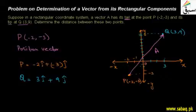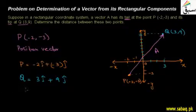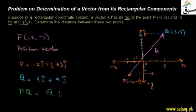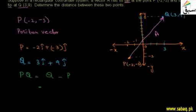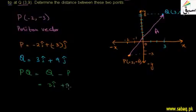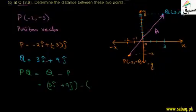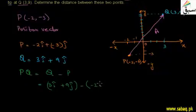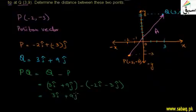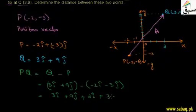Now, to find the distance between P and Q, we need to find vector A, which equals Q vector minus P vector. So A = (3î + 9ĵ) minus (−2î + (−3)ĵ). Opening the brackets, we get 3î + 9ĵ minus (−2î) minus (−3ĵ), which simplifies by combining like terms.